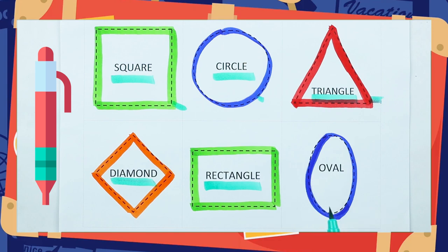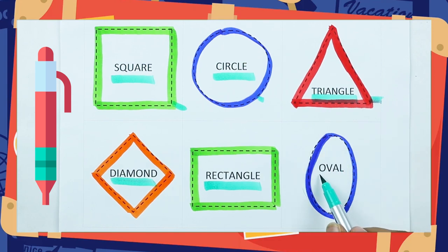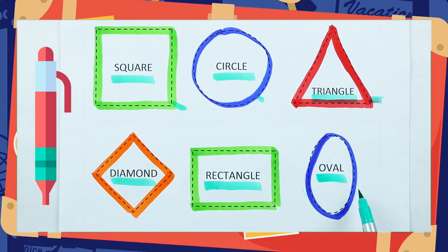With green color. Which shape is this? Oval. Right. O-V-A-L. It's an oval, with blue color.